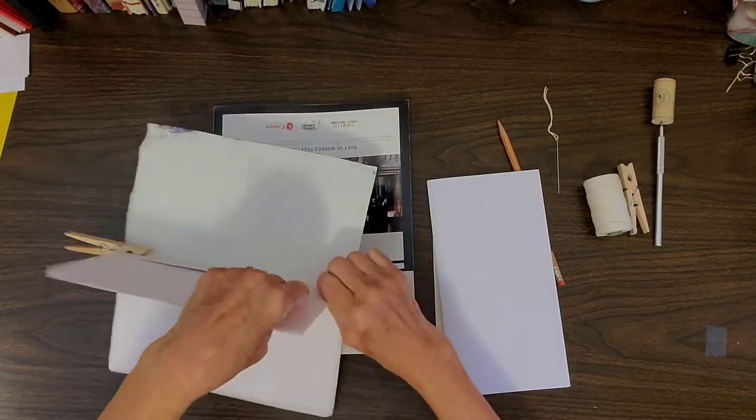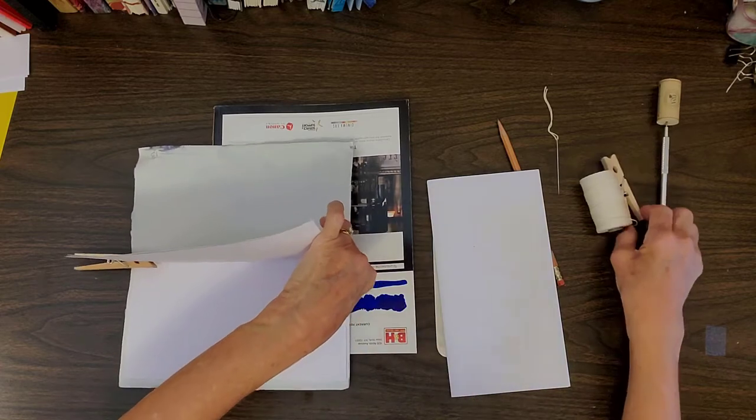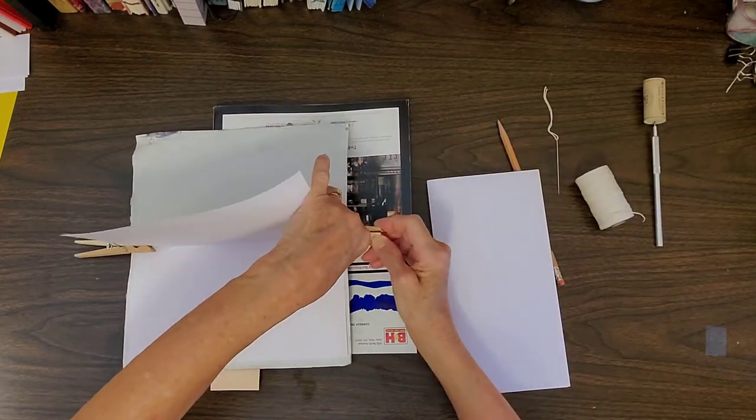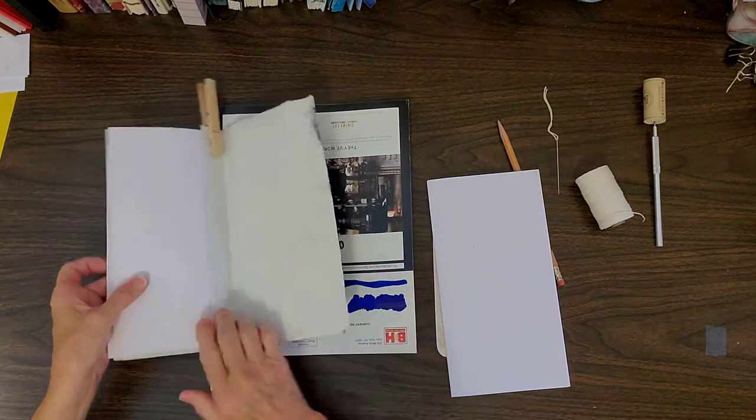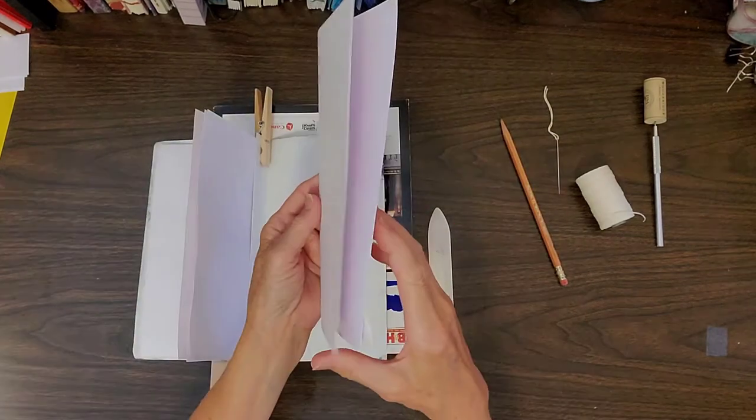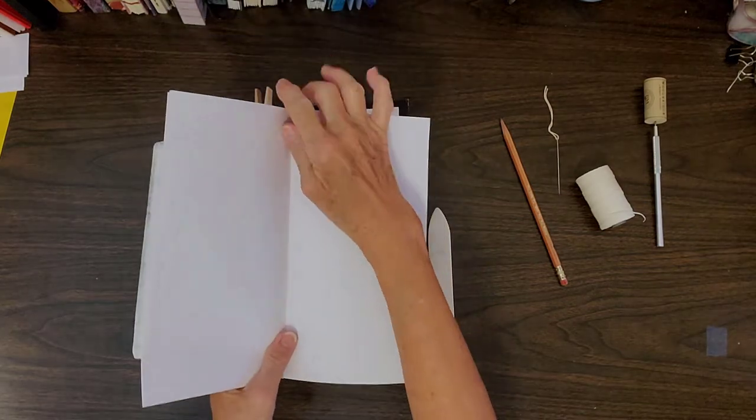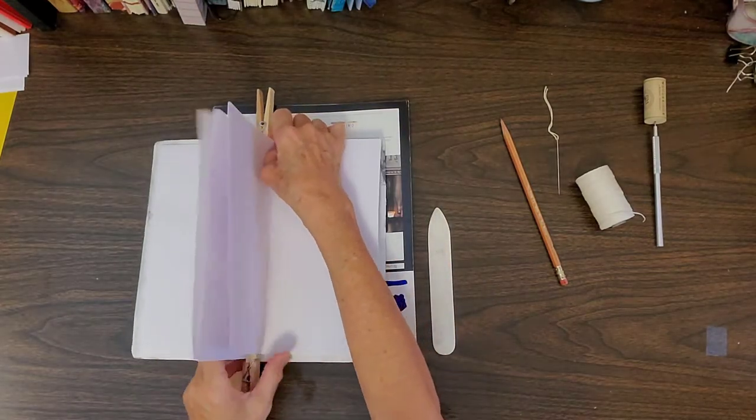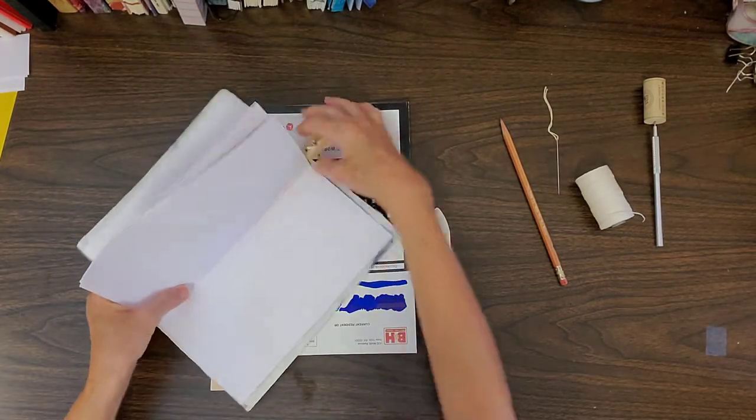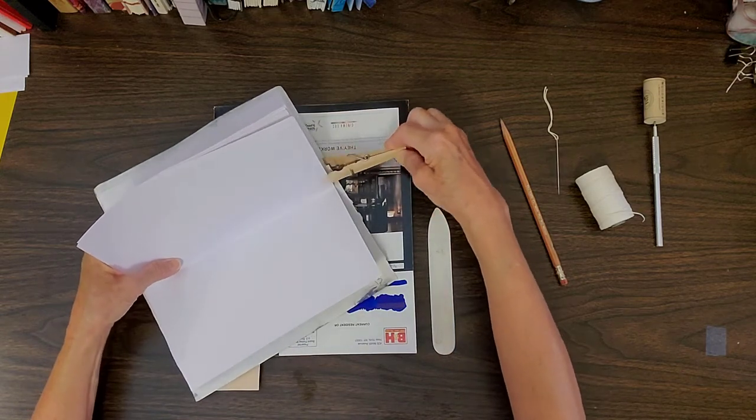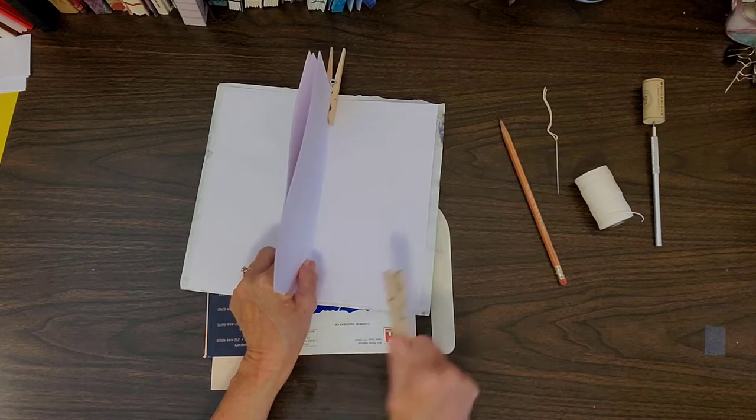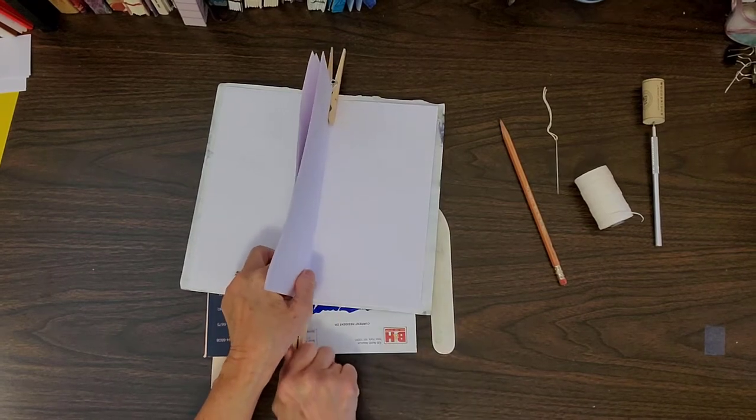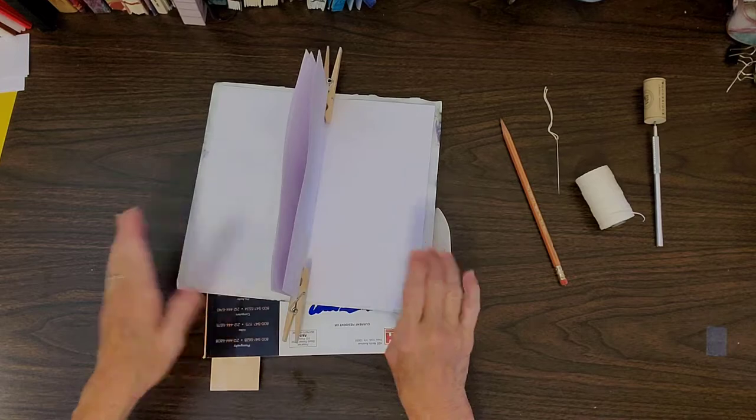Use these clothespins to hold it on that middle folded paper. Paper clips also work well or binder clips. I just find clothespins are easier to manipulate. Do the same with the second signature and this time you're going to join the second signature with the first signature in and around that folded piece of paper, so be very careful that you don't lose where it's folded.